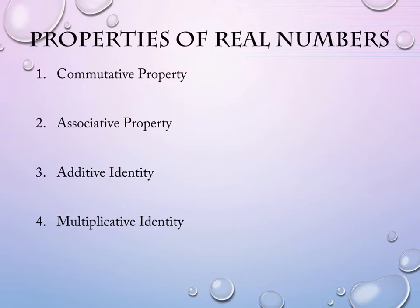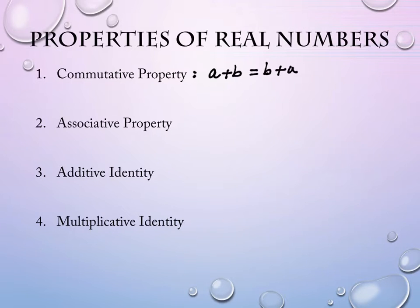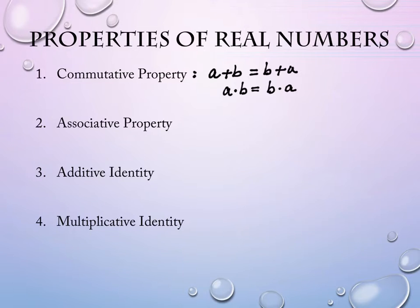The first one is the commutative property. It says that if you have a plus b, then it equals b plus a. And not only can you do it with addition, you can do it with multiplication: a times b equals b times a. It's really nice when you get to the end of your multiplication and addition tables — the order switching doesn't change it.